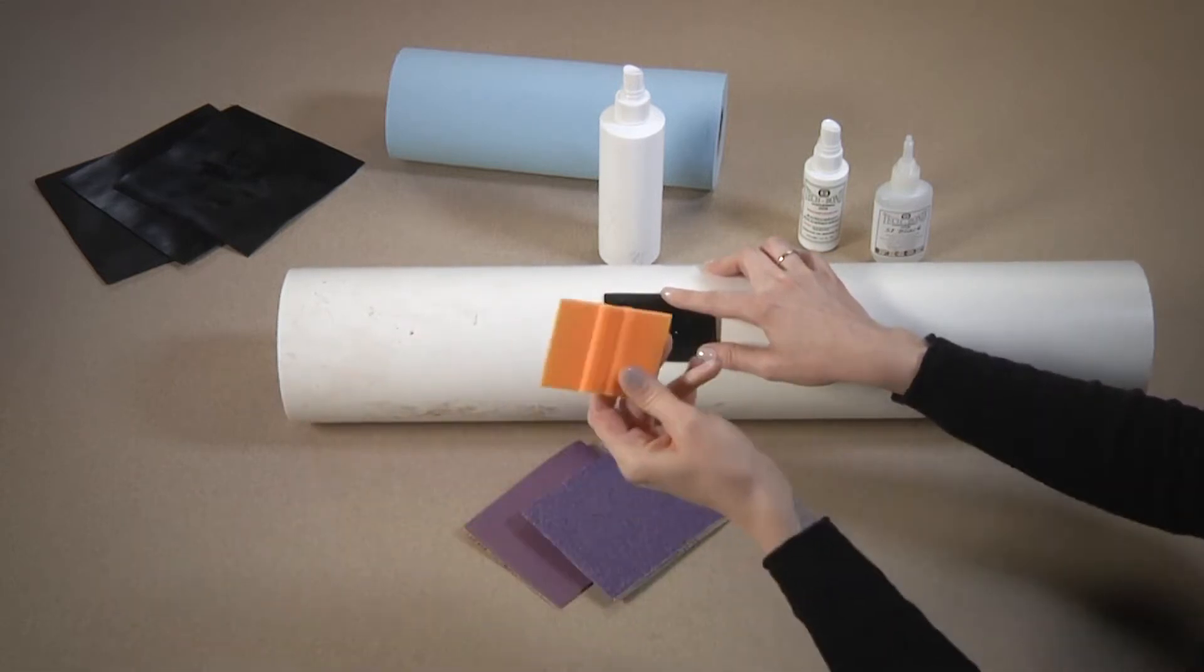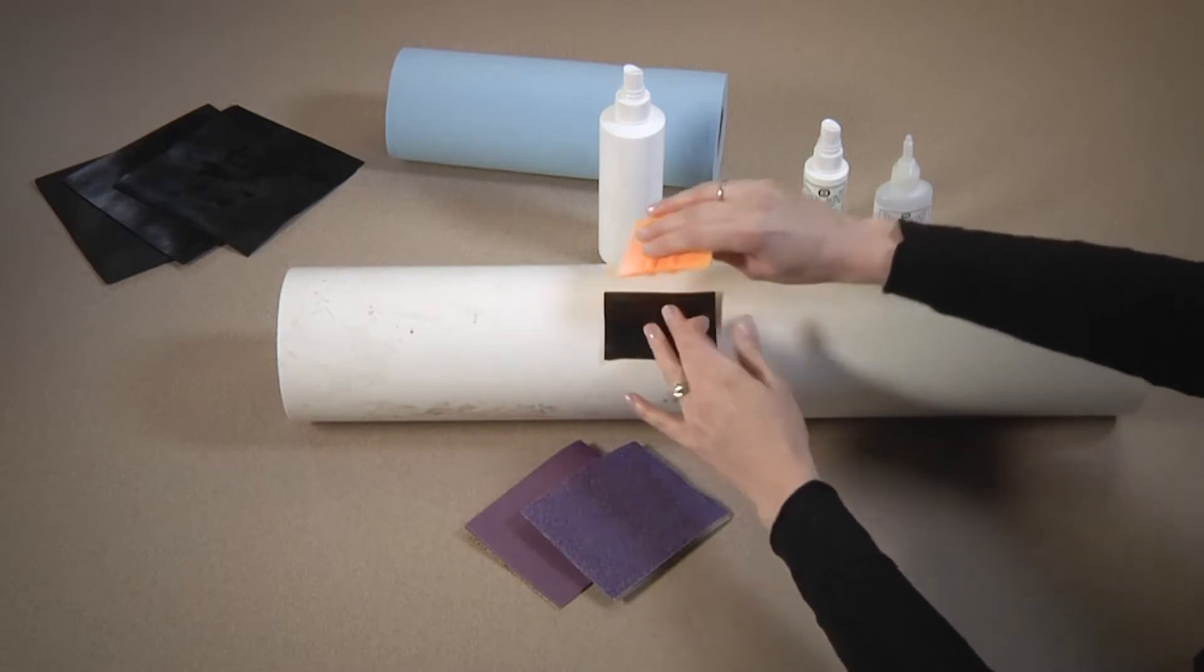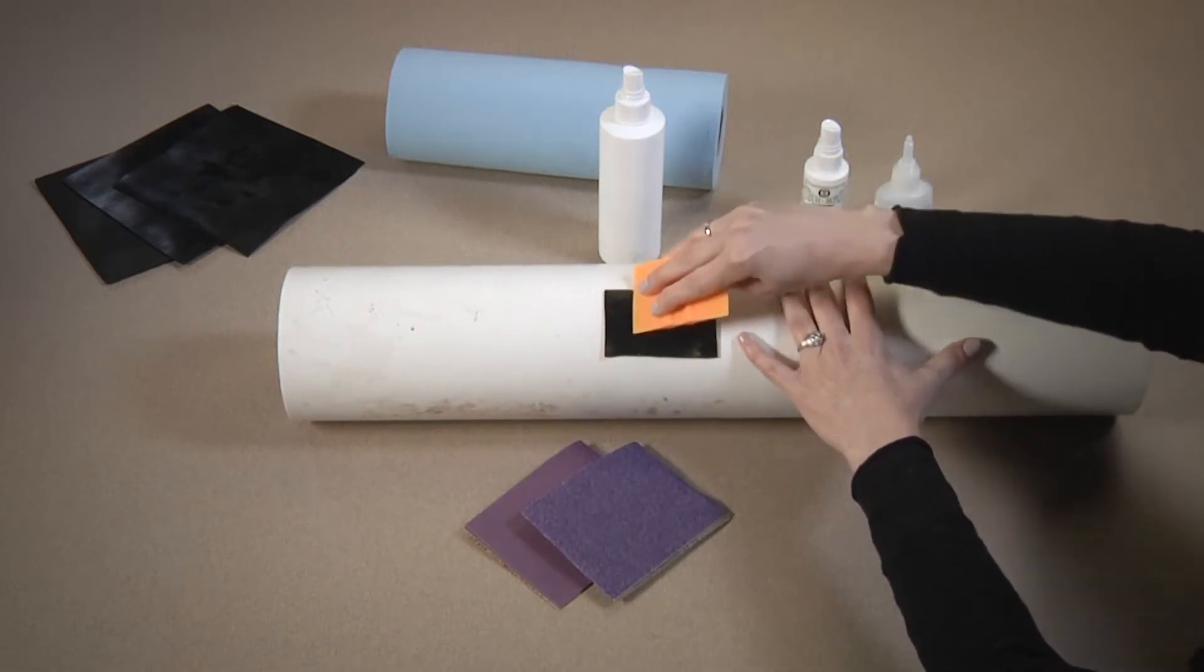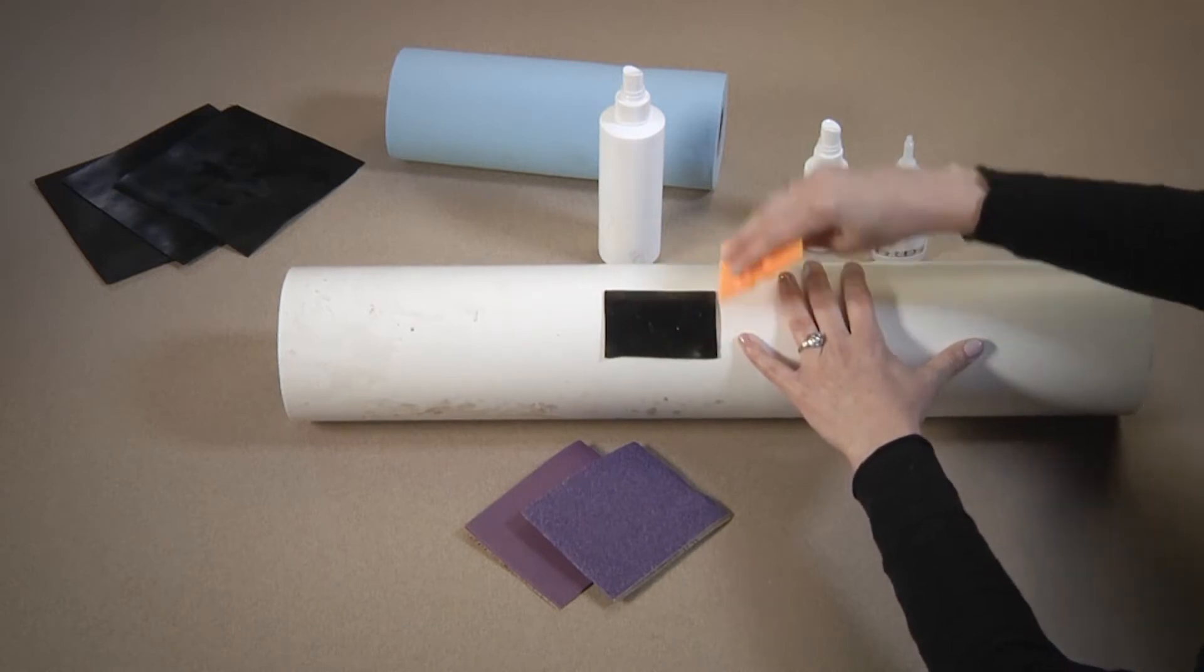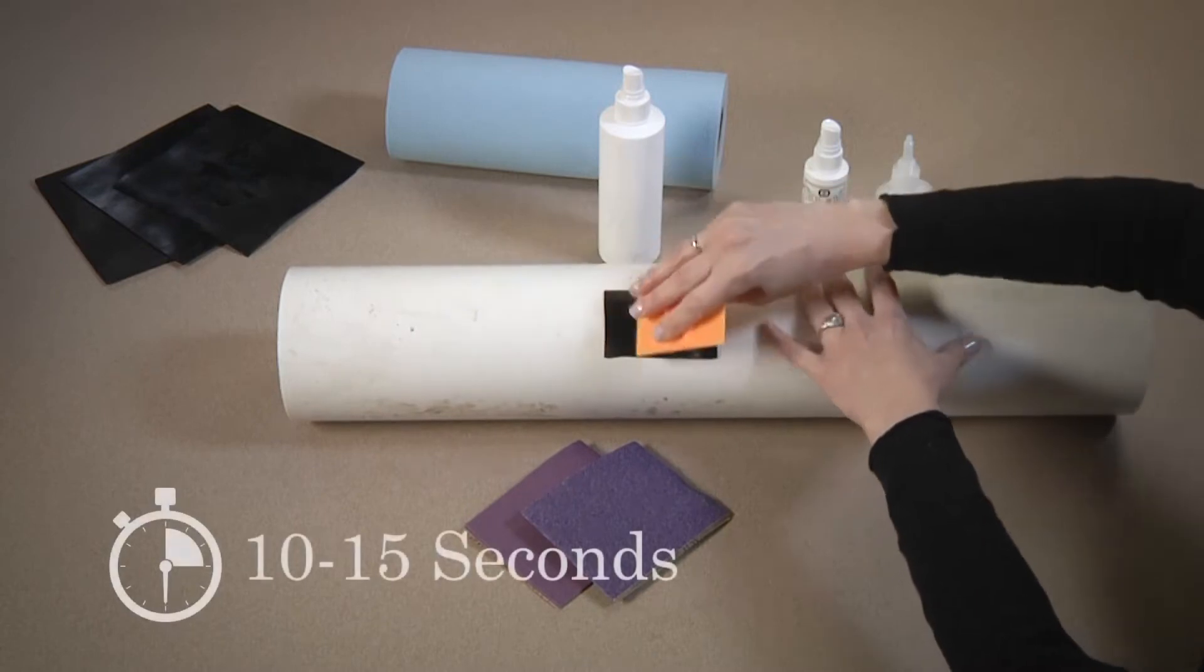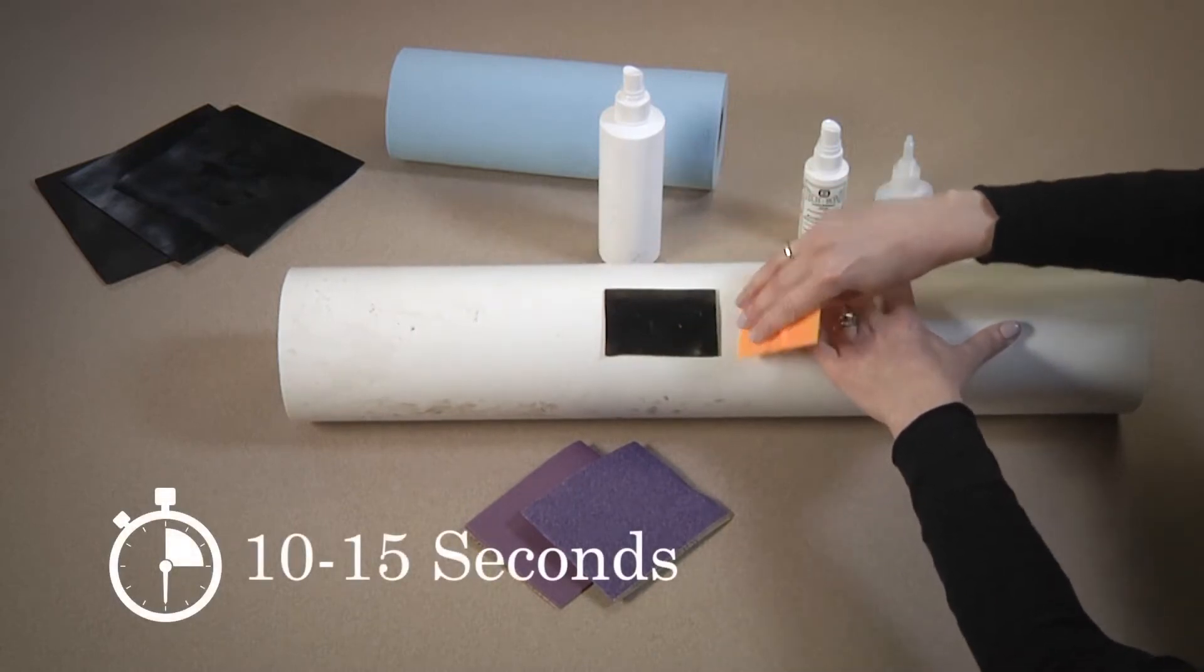Now we're going to use the glue squeegee as a blade to apply pressure on the patch from the center outward. Repeat with pressure for 10 to 15 seconds.